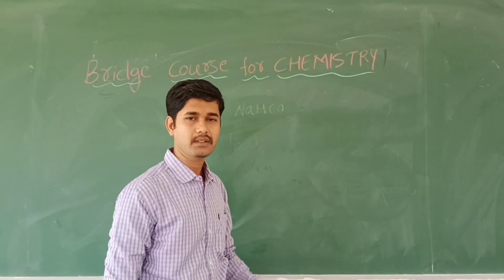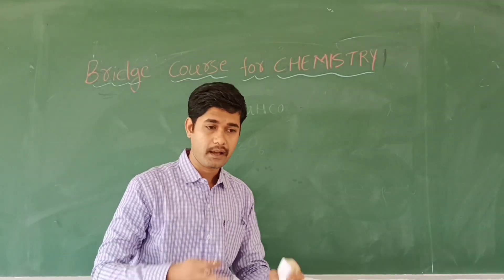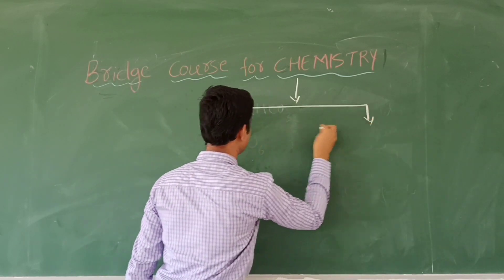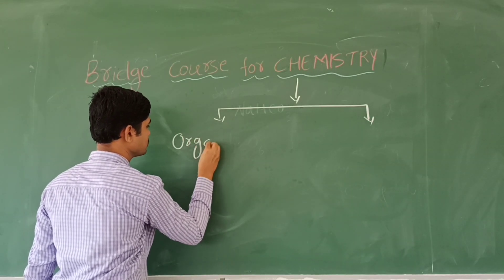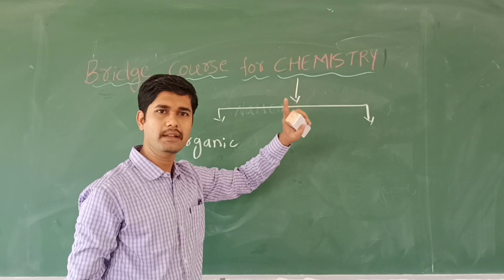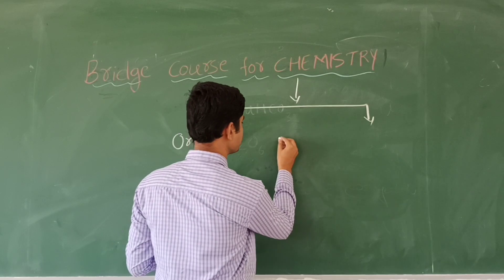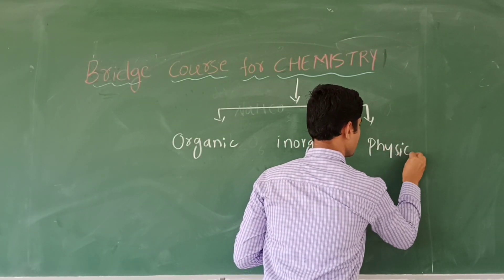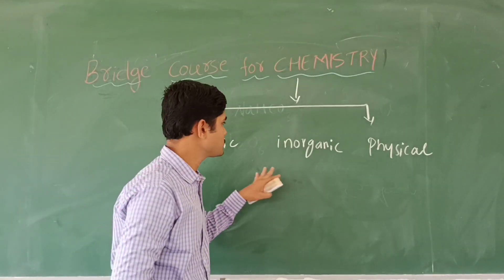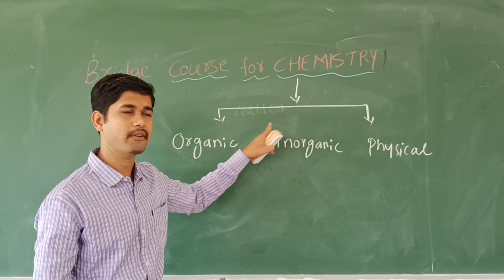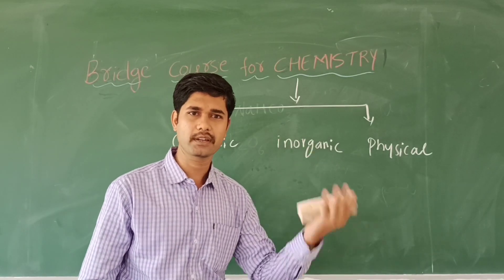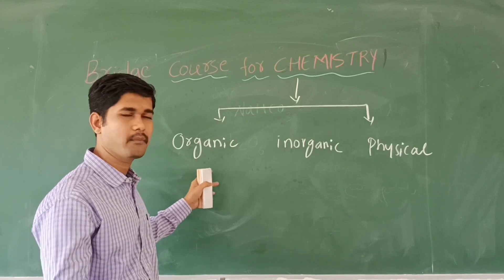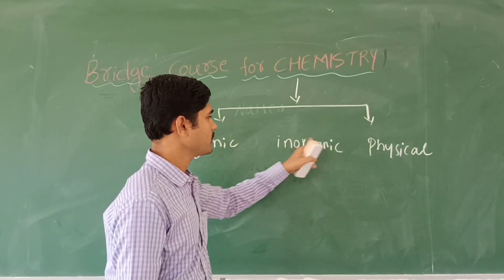Now that you know the definition of chemistry, there are three main branches you are going to study in detail in PUC Science. We divide chemistry into three categories: the first one is organic chemistry, the second one is inorganic chemistry, and the third one is physical chemistry. We classify into these types to study in depth. There are also other branches like industrial chemistry and applied chemistry, but according to your PUC level, we focus on organic, inorganic, and physical.